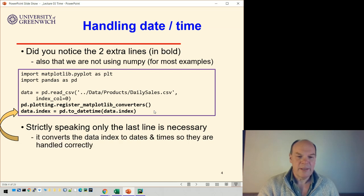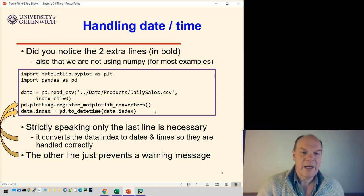So as I said, strictly speaking, only the last line is necessary. And the other one just prevents a warning message. Also notice I'm not using NumPy in most of these examples. I don't think any of them today because we don't need it.